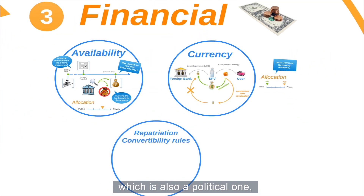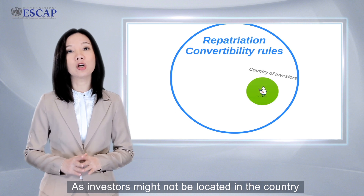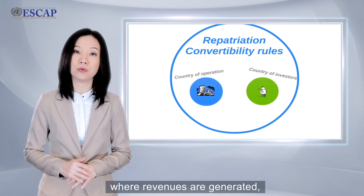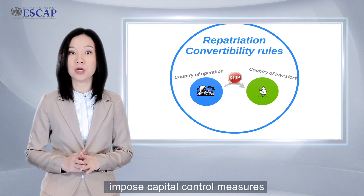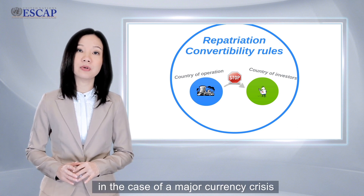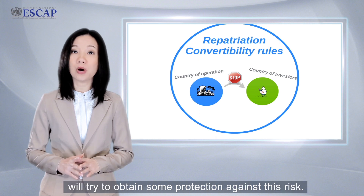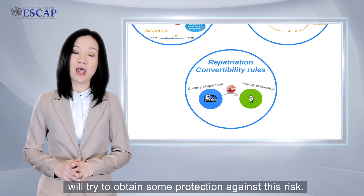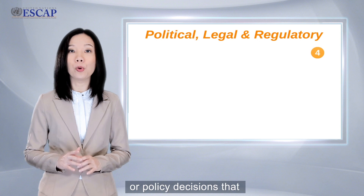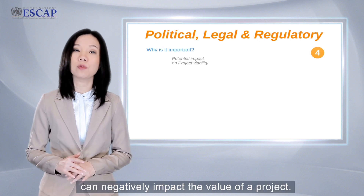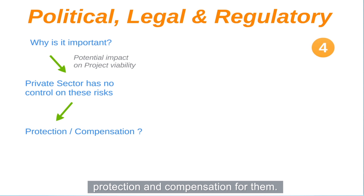The third financial risk, which is also a political one, is related to the repatriation and convertibility of revenues. As investors might not be located in the country where revenues are generated, money will need to be transferred abroad. However, a country might decide to impose capital control measures — for instance, in the case of a major currency crisis — thereby reducing the ability to make transfers. In emerging markets, the private sector will try to obtain some protection against these risks. Another set of risks relates to adverse changes in the legal framework or policy decisions that can negatively impact the value of a project. Having no control over these risks, the private sector will seek measures of protection and compensation, and if such risk is perceived as too high, there will be no interest from the private sector.